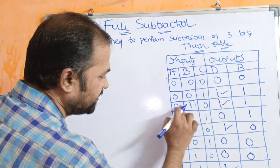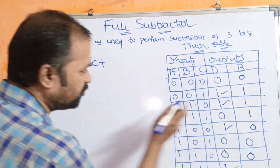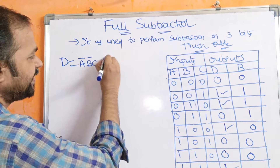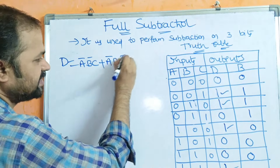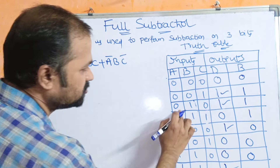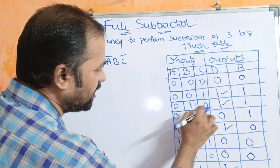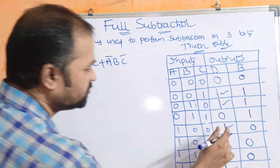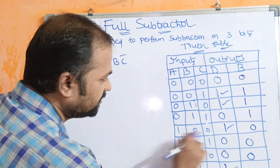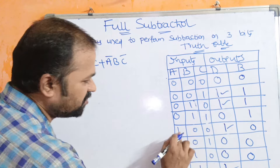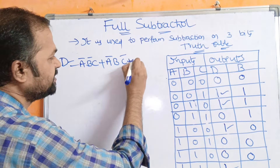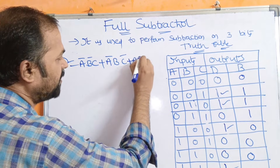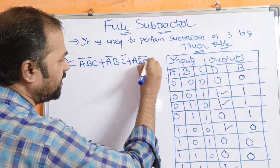The second combination with difference 1 is 0,1,0, which gives A-bar, B, C-bar. The third combination is 1,0,0, which gives A, B-bar, C-bar. The last combination is 1,1,1, which gives A, B, C.